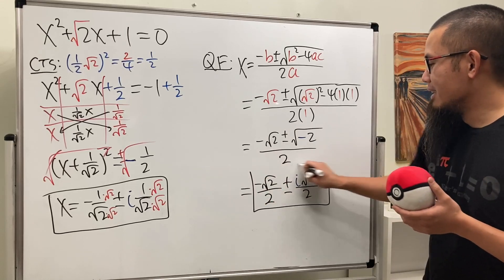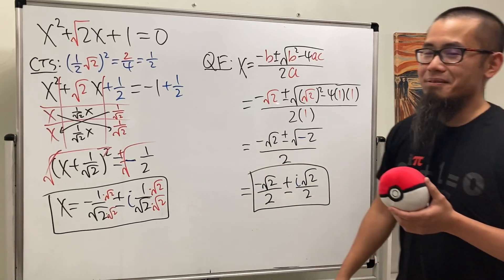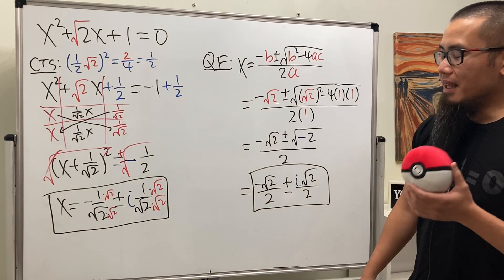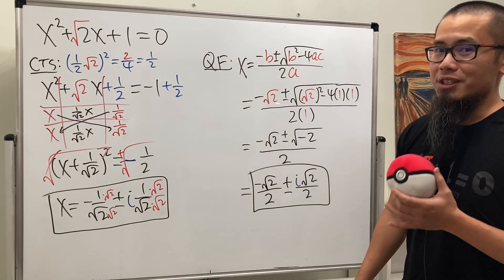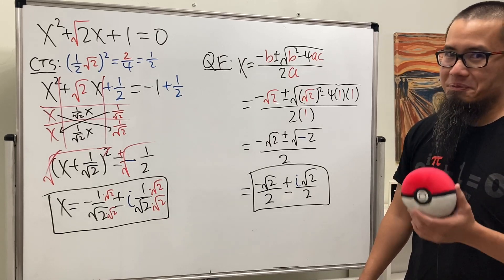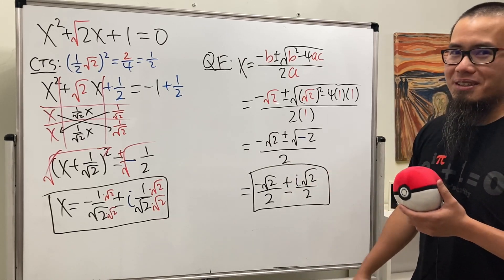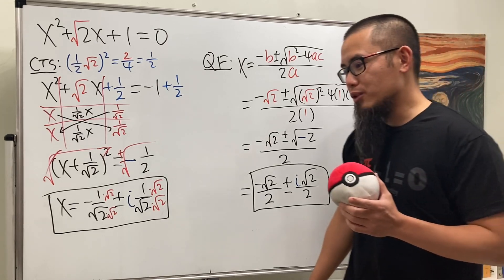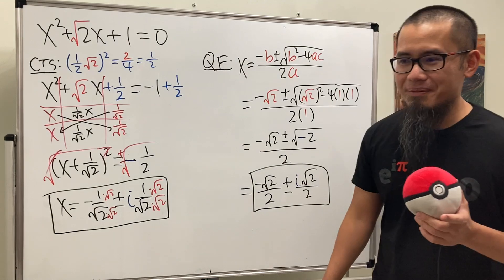Or if you multiply the square root of 2 on the top and on the bottom right here, you can reduce to this. So either way, in fact, let's just go ahead and do it right here. And then you'll see that this is equivalent to that. So yeah, that is the answer. This answer looks very similar to the square root of i. So here you go. By the way, hopefully you like this. And I'm going to solve another quadratic equation with irrational coefficients next time.